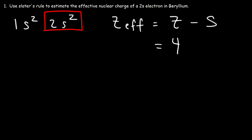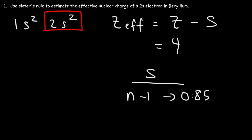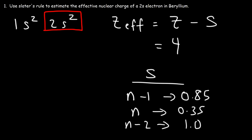To calculate S using Slater's rule: for electrons in a lower group, say n minus 1, you give it a value of 0.85. For electrons in the same group, 0.35. For electrons two groups lower, we give it a value of 1. That's based on Slater's rule.